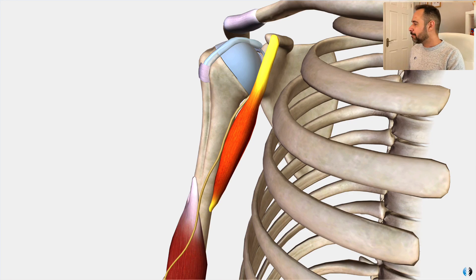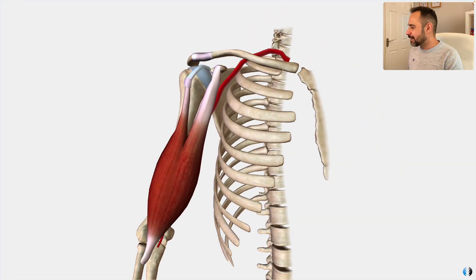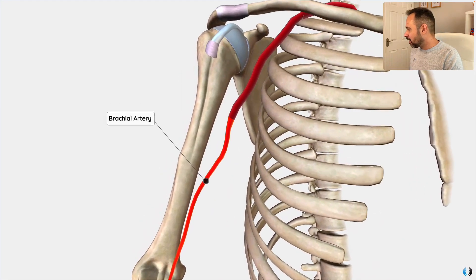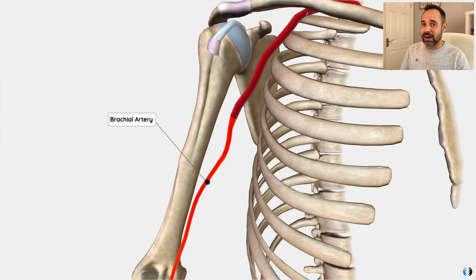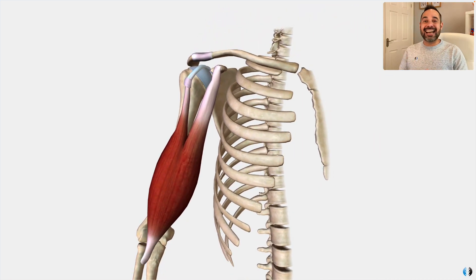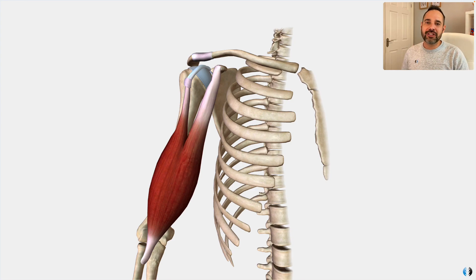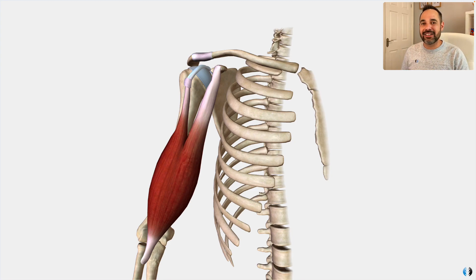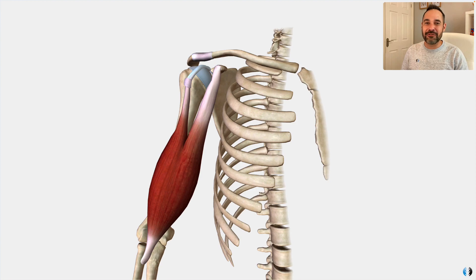Finally, the blood supply for the biceps brachii comes from the brachial artery, which is one of the major arteries running through the upper arm. That ends this anatomy tutorial. We do have some brilliant other videos specifically looking at different pathologies of the biceps brachii muscle, including long head of biceps tendinopathy, long head of biceps tendon rupture, and distal biceps tendon rupture. Thank you so much for watching. My name's Khalid - we'd love to see you again soon here on Clinical Physio.